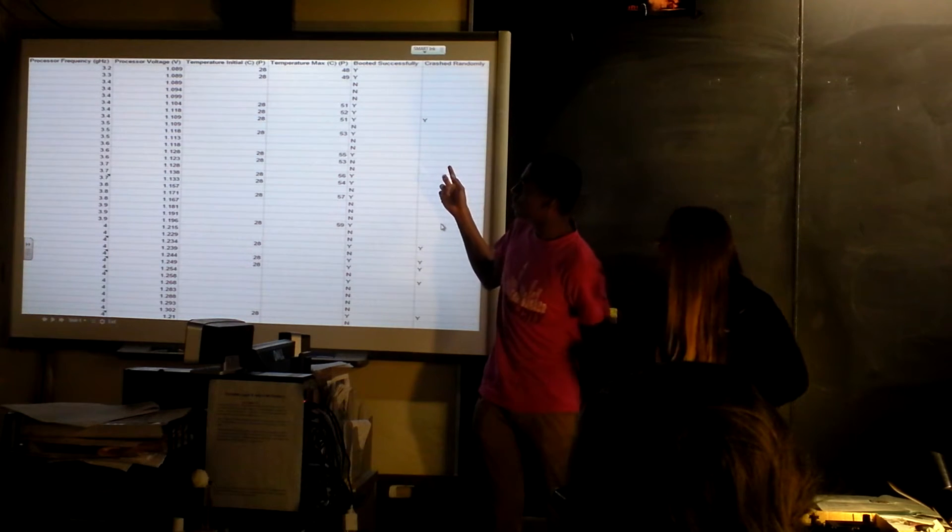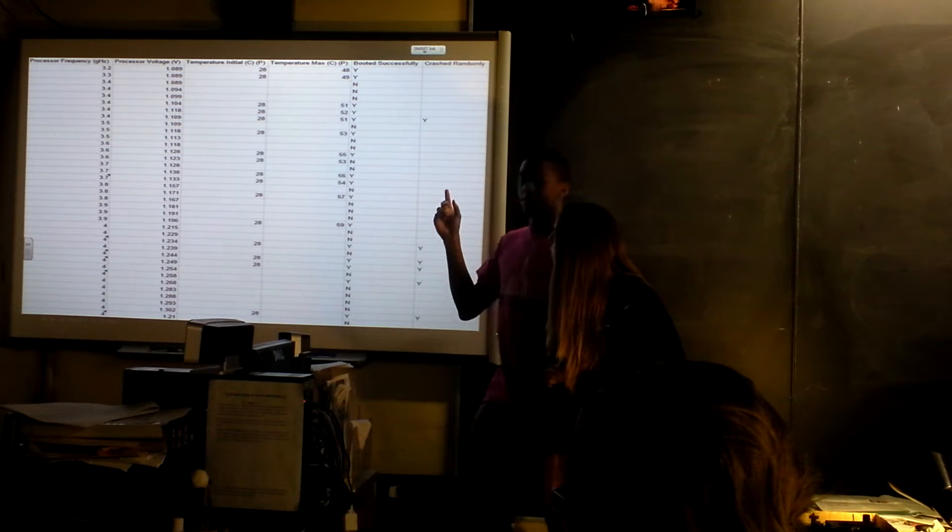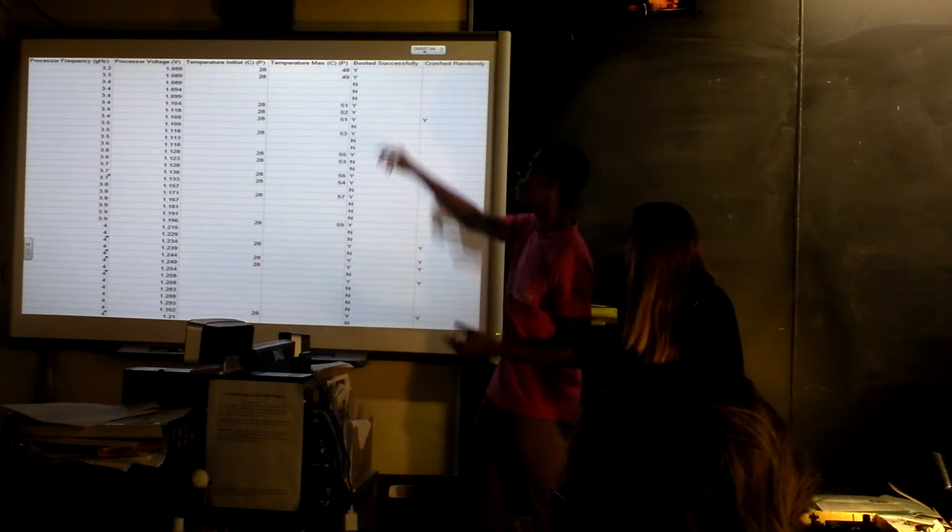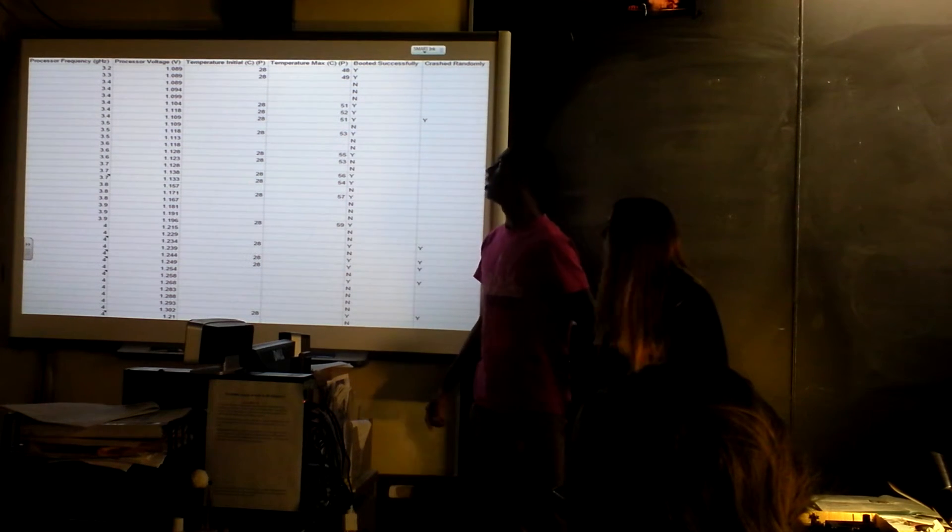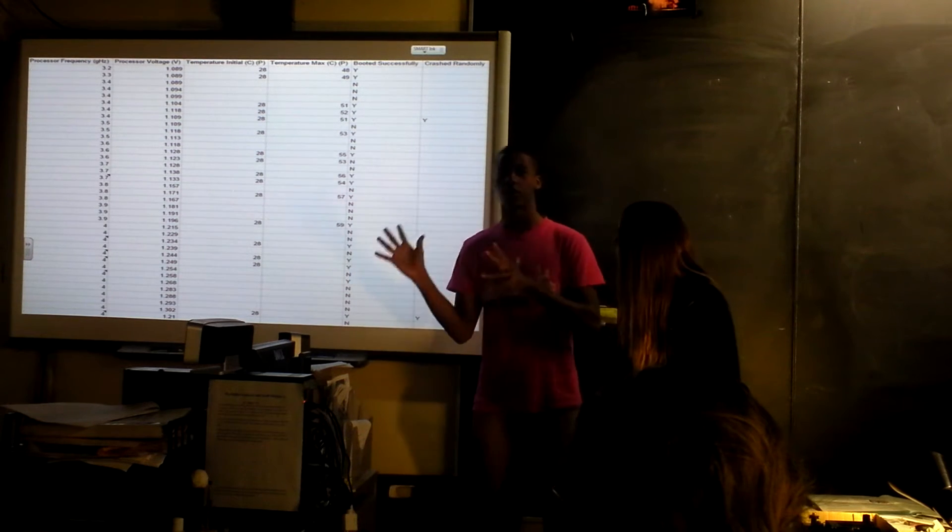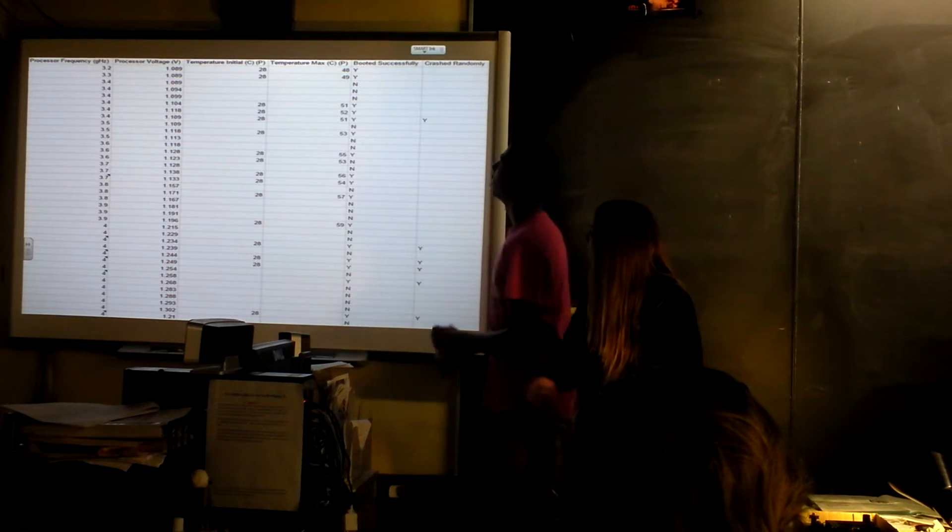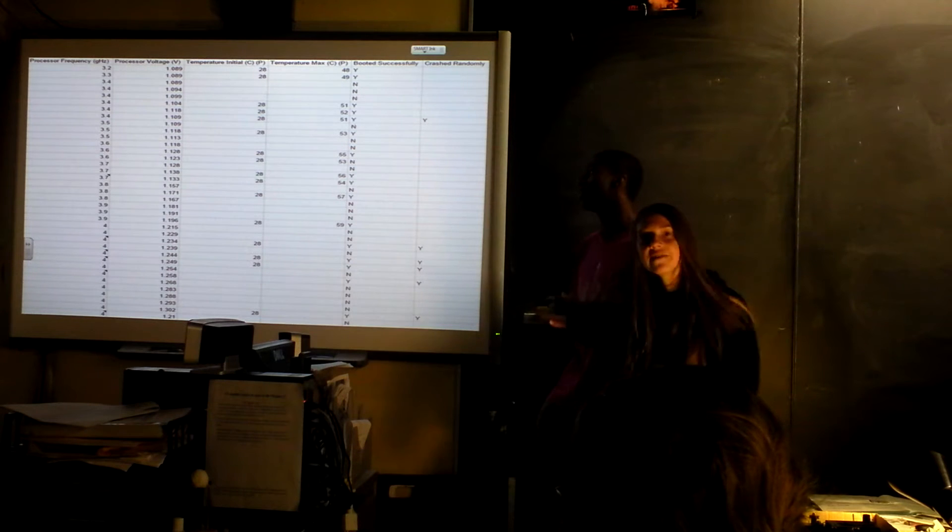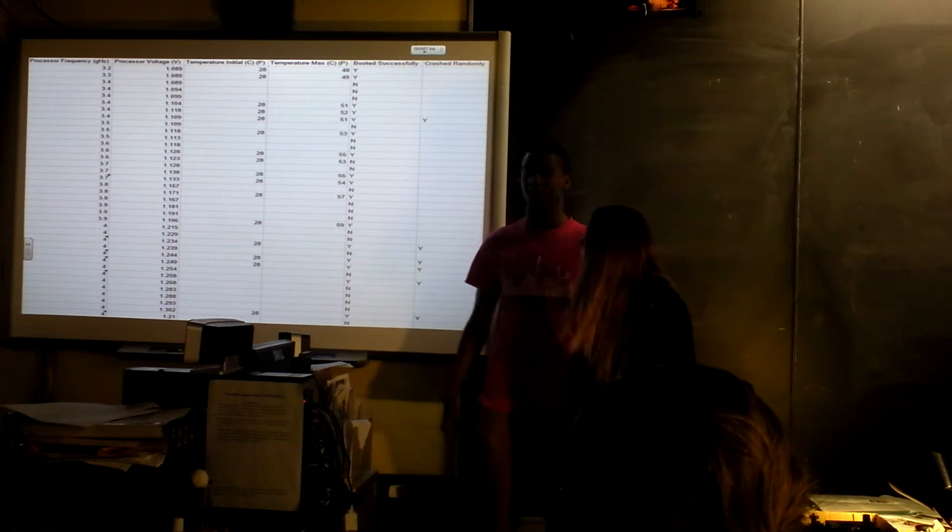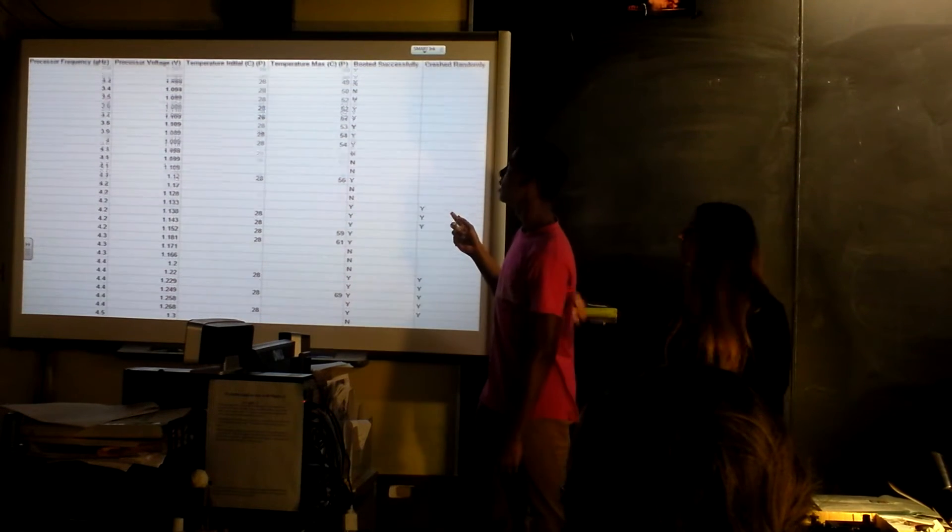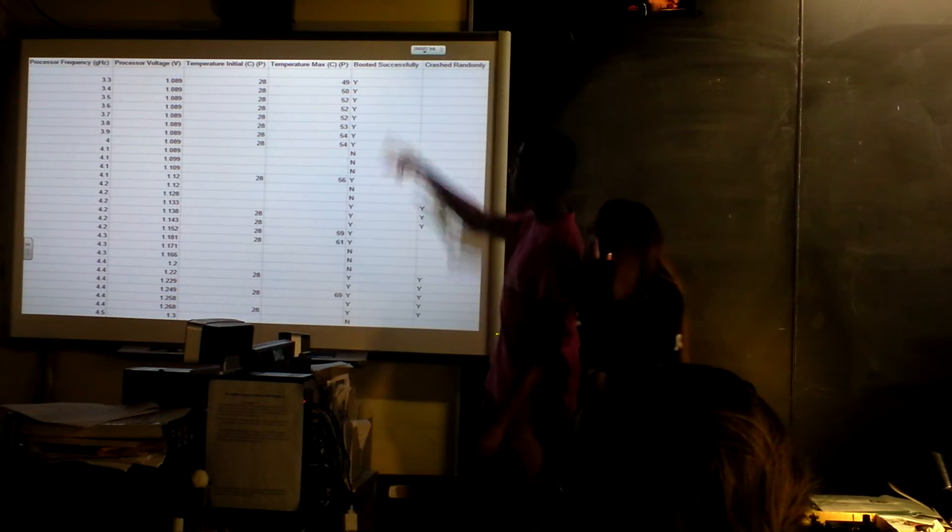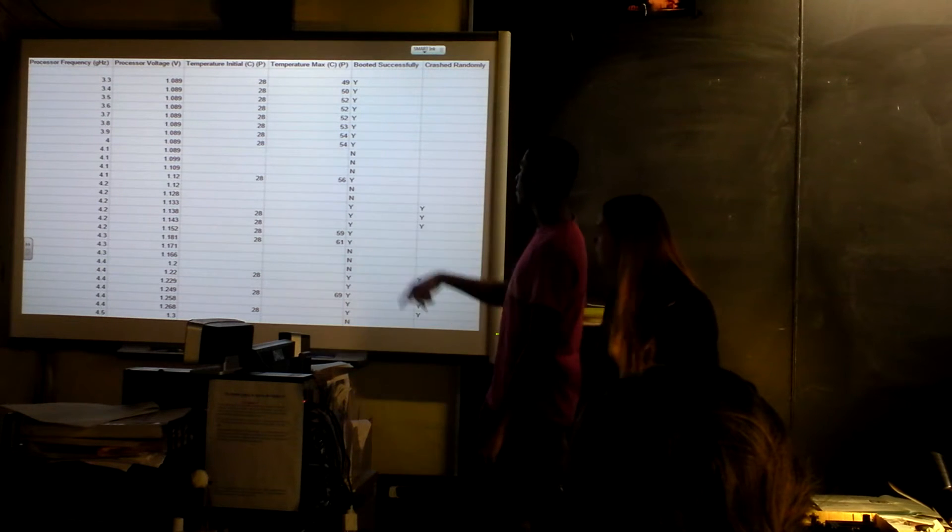And this is raw data from method one. Something that's really cool about this is when the processor doesn't have enough voltage to operate, it doesn't boot. So all the N's you see mean that there wasn't enough voltage going to the processor to start the computer. It would try to start and then shut down and restart. Sometimes it would start up but then it didn't actually have enough voltage, so it would crash once it started up. And then this is the same thing for the second method.